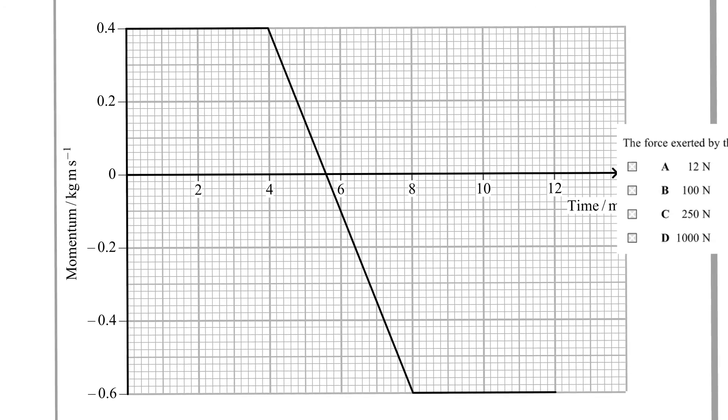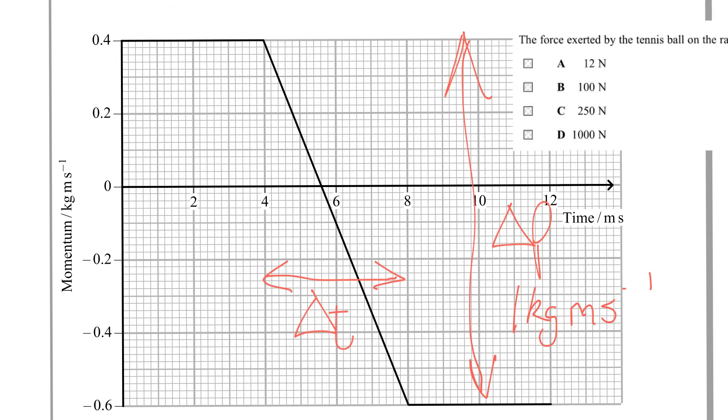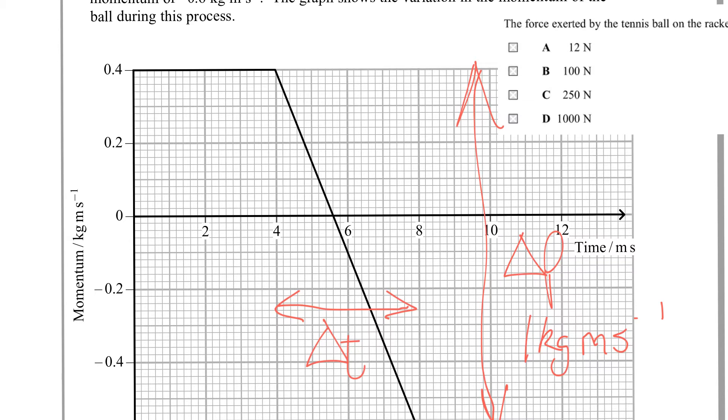So the question asks what is the force on this. The force on something is the rate at which the momentum is changing. So on this graph we have a change of momentum which is that difference there and we have a time taken which is that there. This is delta p, this vertical thing, and this is delta t, and the force is the ratio of those two. We can see that delta p here is one kilogram meter per second and delta t here is four milliseconds.